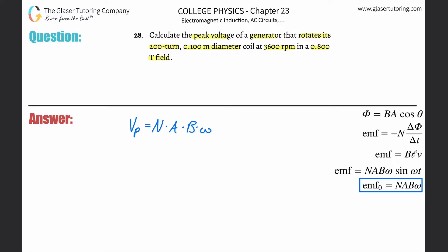The number of turns is 200, the area is π times radius squared - we have the diameter so we know what to do with that. The magnetic field is 0.8 tesla, and then 3600 RPM, which is not the right unit.